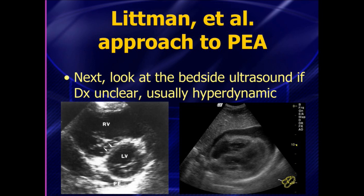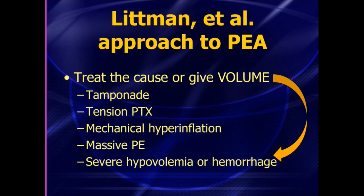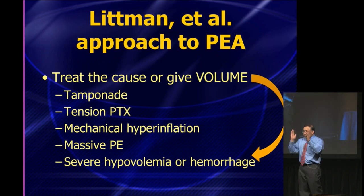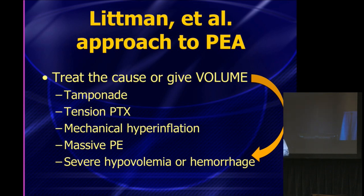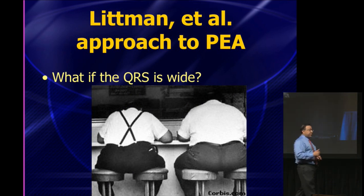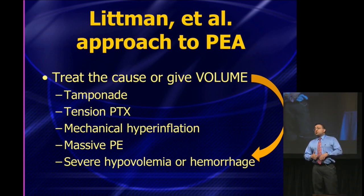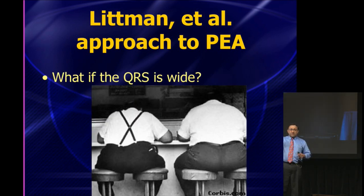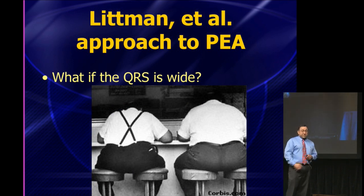Now, what if the QRS is wide? All of these narrow QRS types of PEA will be hyperdynamic when you look at the heart — beating really fast, tachycardic, trying to produce something. In contrast, patients with a wide QRS are almost always metabolic, tox, or a really sick, dying heart. We're talking severe hyper-K, severe acidosis, a tricyclic or other sodium channel blocker overdose, or in some cases a massive MI with a heart that's about to stop — a heart you're probably not even going to get to a cath lab fast enough to fix.